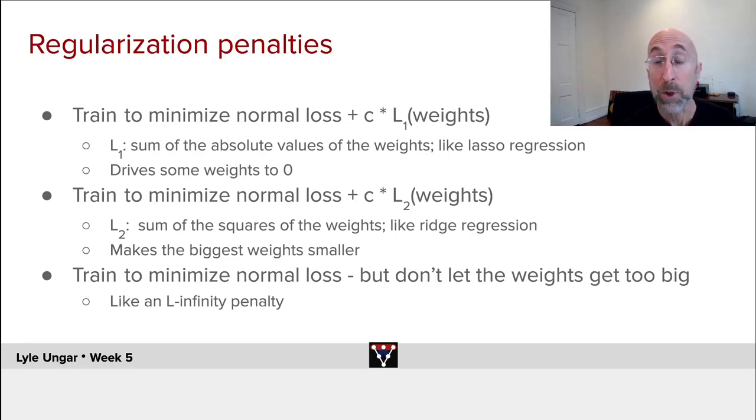You can train a neural net to minimize the training error plus a constant times the L2 norm of the weights squared, the sum of the squares of the weights.